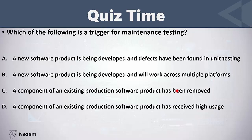'A component of an existing production software product has received high usage' — our system is in production, but this is not modification, migration, or retirement. This means the system is live and many users use it. This may or may not need maintenance testing — if high usage leads to performance problems, we will need maintenance testing, but if everything is okay, we don't need any type of maintenance testing.